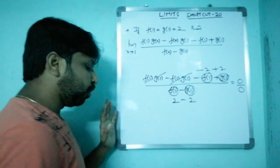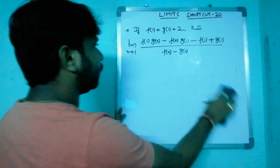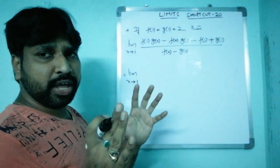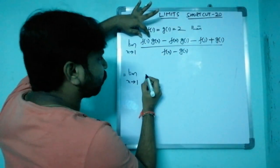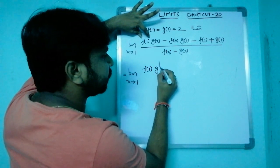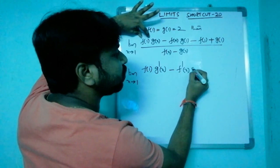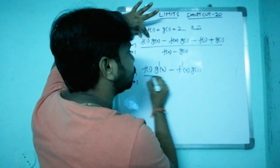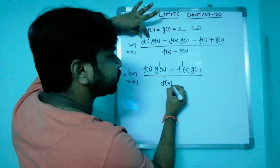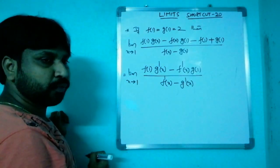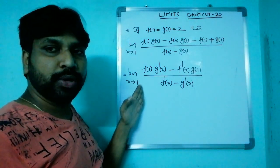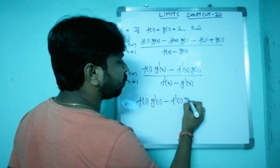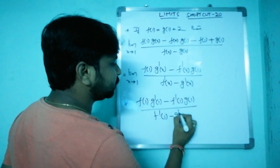Applying L'Hôpital's rule: f(1) is constant, so differentiate g(x) to get g'(x); g(1) is constant, so differentiate f(x) to get f'(x); the constants -f(1) and +g(1) differentiate to 0. The denominator becomes f'(x) - g'(x). Now substitute x = 1: we get f(1)·g'(1) - f'(1)·g(1) all divided by f'(1) - g'(1).